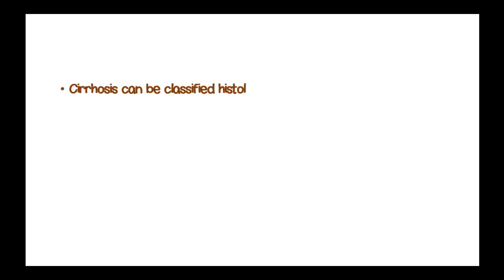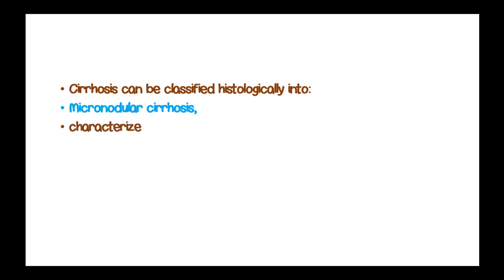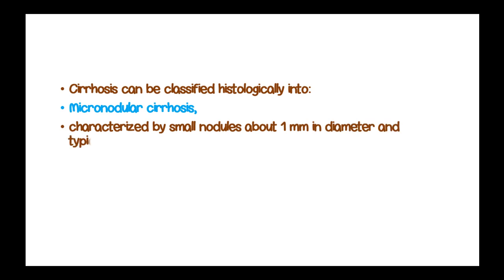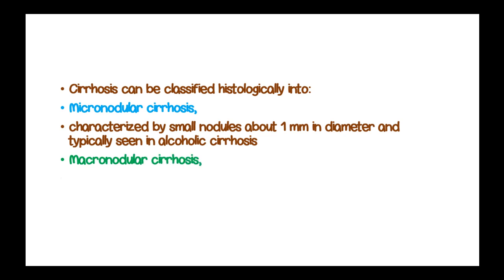Cirrhosis can be classified histologically into two types: micronodular cirrhosis, characterized by small nodules about 1 mm in diameter, typically seen in alcoholic cirrhosis; and macronodular cirrhosis, which is characterized by larger nodules.